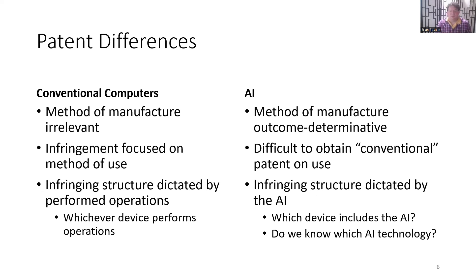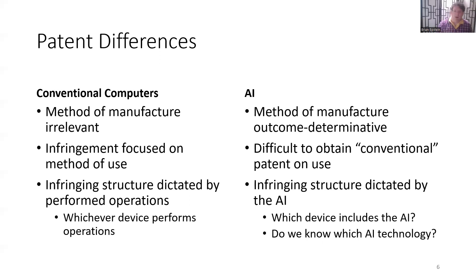How does this inform differences in patenting? For conventional computers, the method of manufacture is almost irrelevant — things like the programming language are almost never the focus of software patents in the United States. But for AI, the method of manufacture is outcome determinative. How you train the AI informs how it operates and what it does. Your training method is outcome determinative.